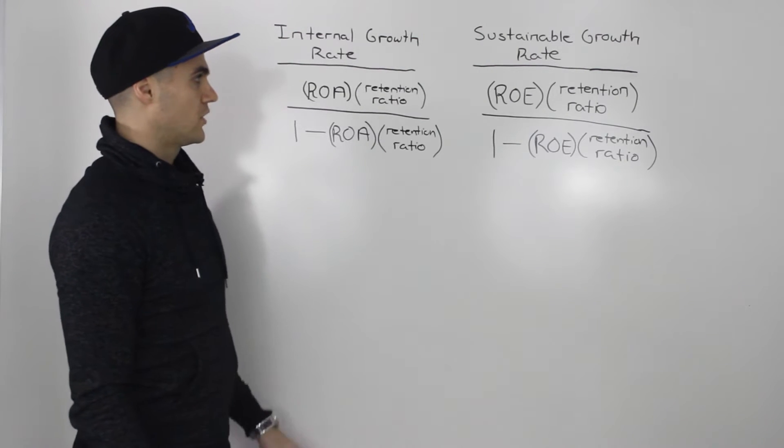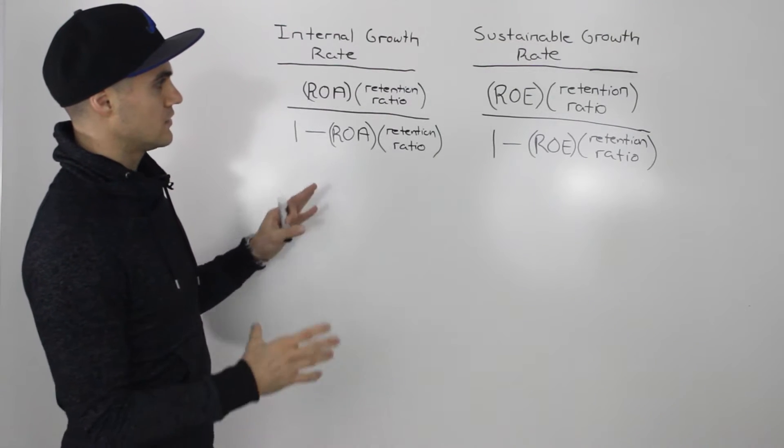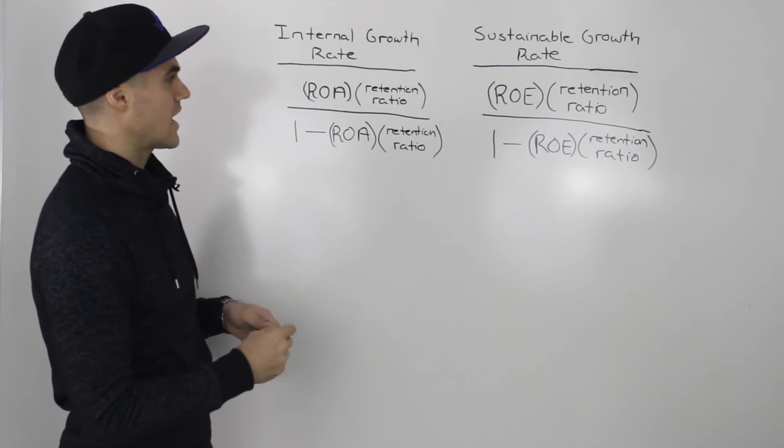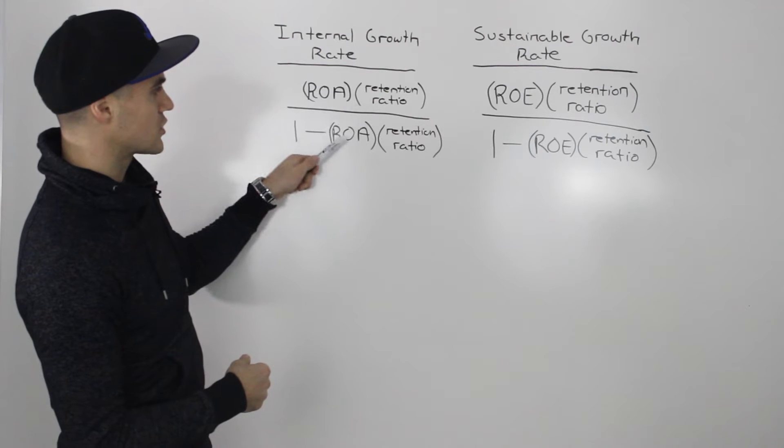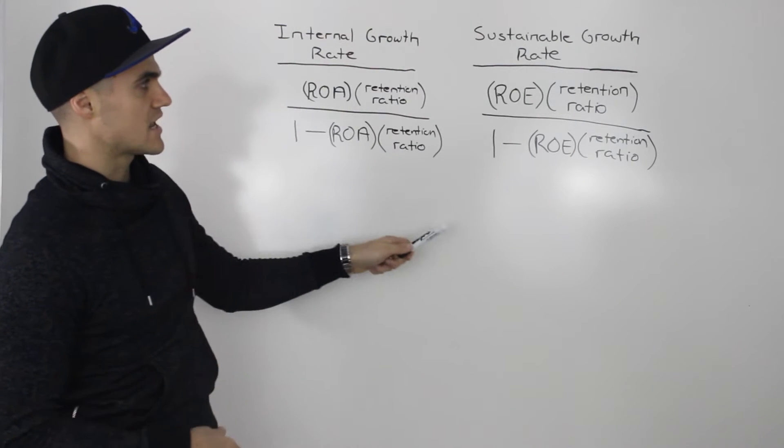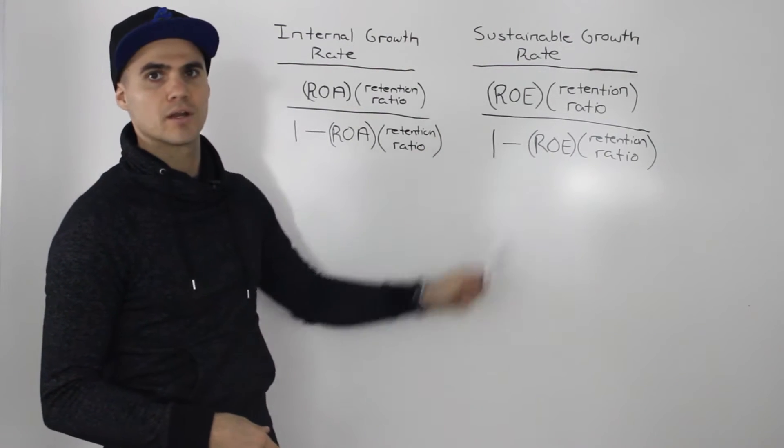The first quick difference I'll point out is the difference in the formulas. Looking at them, the format looks almost the same. The only difference is that the internal growth rate is using the return on assets (ROA) while the sustainable growth rate is using the return on equity (ROE).